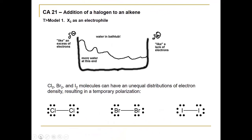It might surprise you that a halogen can serve as an electrophile — that is, a diatomic halogen. I've written out here diatomic chlorine, diatomic bromine, and diatomic iodine. As we know, these are non-polar bonds, so it's not clear where there may be, for instance, a delta positive.